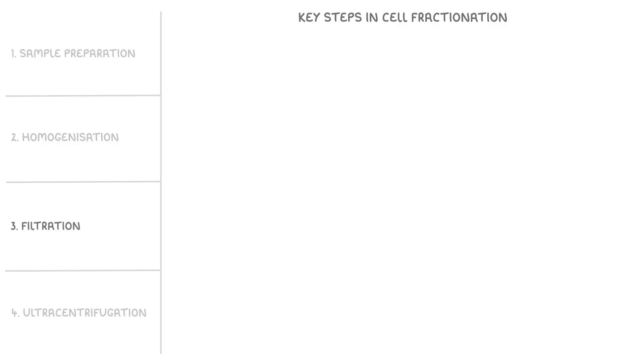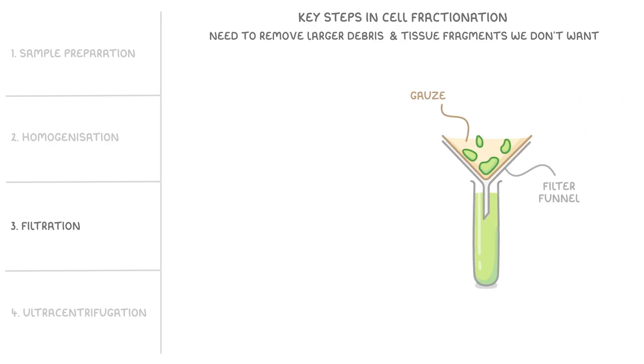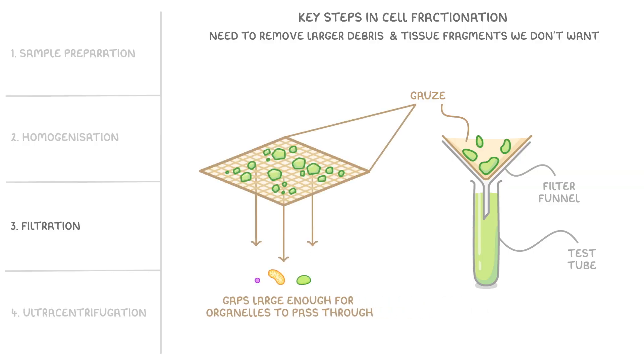After that we need a filtration stage because we need to remove the larger debris and tissue fragments that we don't want from the solution. This filtration is usually done by passing the solution through gauze that's placed in a filter funnel with a test tube below it. The gauze has gaps that are large enough for the organelles to pass through so they move into the test tube to form our filtrate, but the larger debris we don't want stays on the filter because it's too big to pass through these gaps.